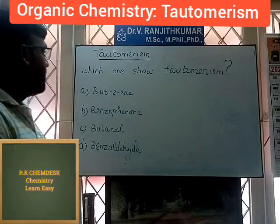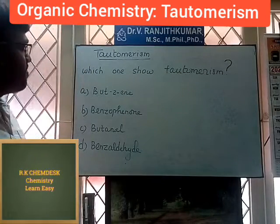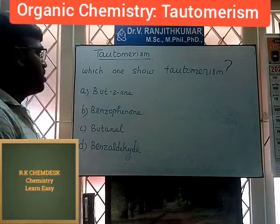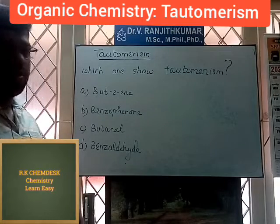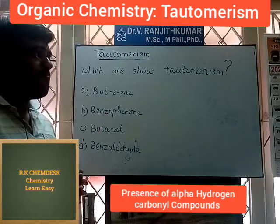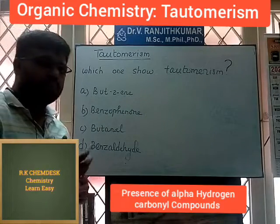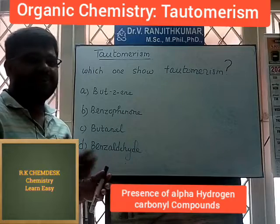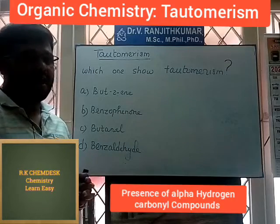What is your question? Which one shows Tautomerism? So Tautomerism — what is common? The condition for tautomerism is alpha hydrogen. Carbonyl compounds with alpha hydrogen show tautomerism.